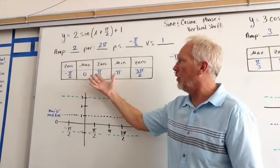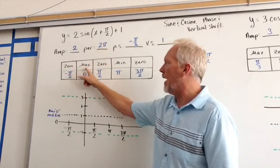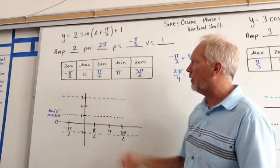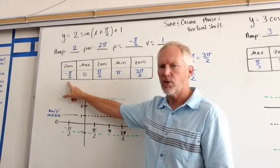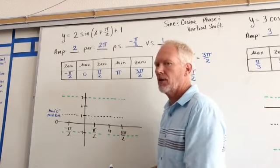We have to build our five key point structure. Sine again: 0, max, 0, min, 0. This point out here is always your phase shift.